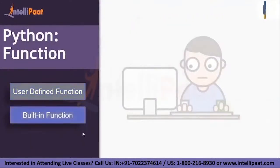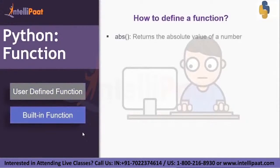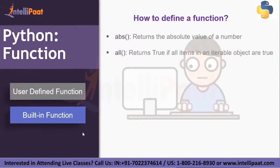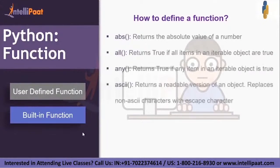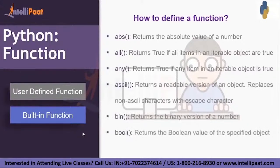Next is the built-in function. These built-in functions are a predefined set of functions in Python. We have the abs function which returns the absolute value of a number, the all function which returns true if all items in an iterable object are true, and the any, bin, bool functions, among many others available in Python. If you want more information about them, you can check out the Python official documentation.